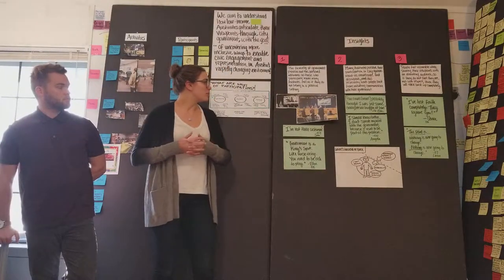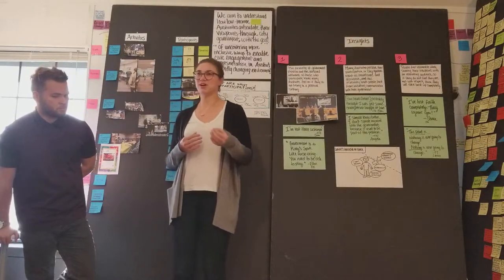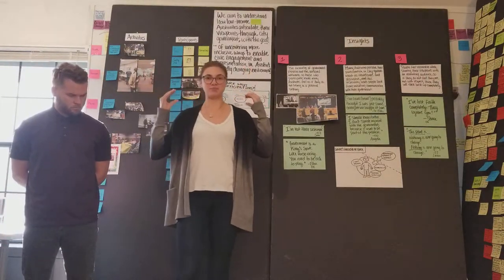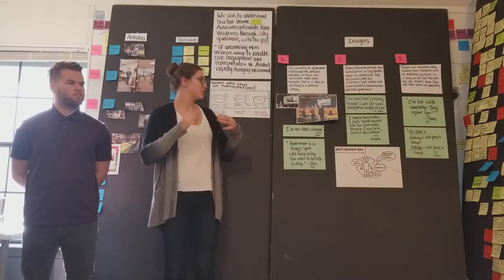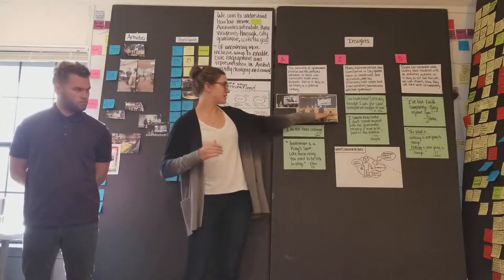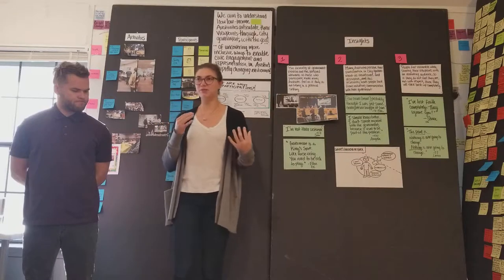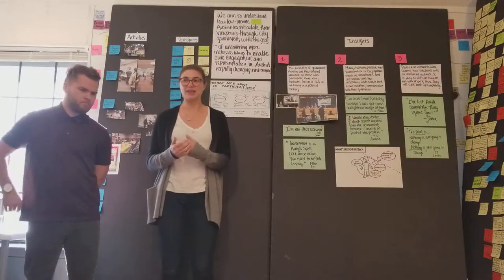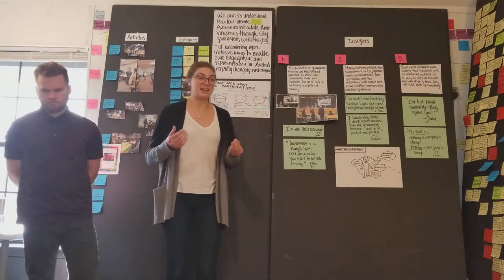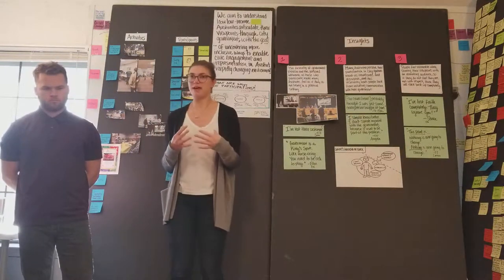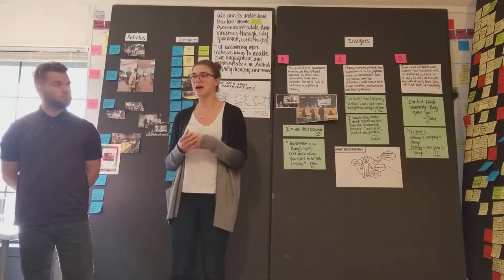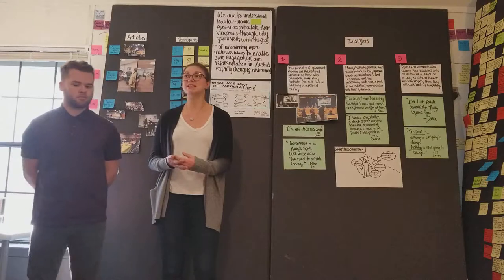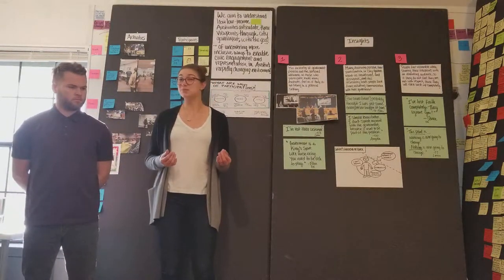This started with our observations attending city council meetings. You enter this big, impressive room — the city hall chambers — there are podiums, council members are raised above you, people are in suits, it's a very formal process with a formalized sign-up and agenda process. When we spoke with citizens, they felt that government wasn't for them. Elton, a man getting citizens to sign a petition outside a community Thanksgiving dinner, told us that government is a king's sport — like horse racing, you need to be rich to play.